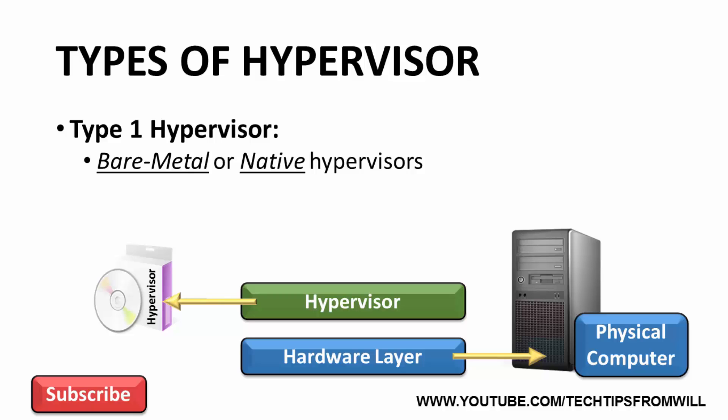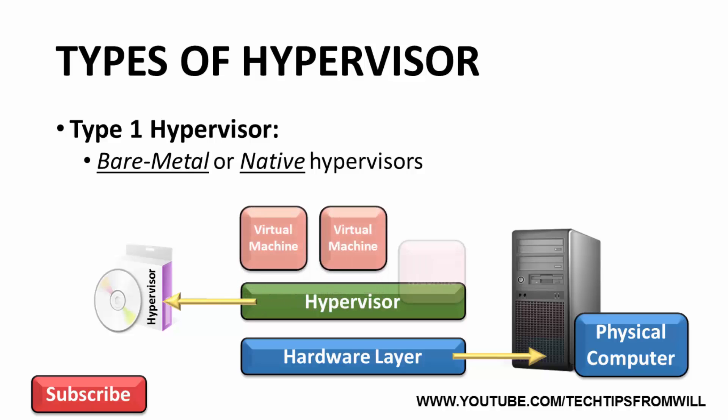With the hypervisor in place, the administrator can then build out virtual machines. Each virtual machine will run its own operating system and is allocated its own CPU, RAM and hard disk space from the host system. As you can see, with a hypervisor you're able to run multiple operating systems at the same time on just one physical computer.